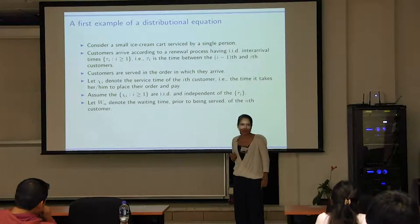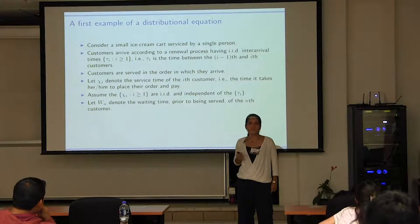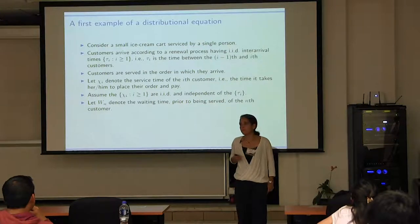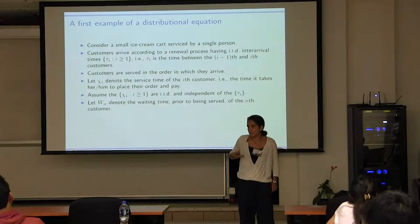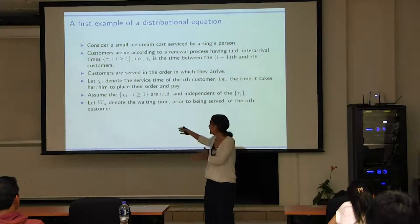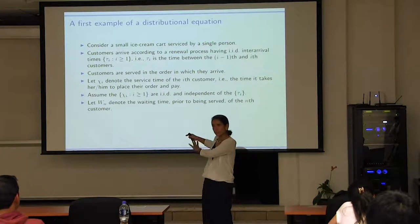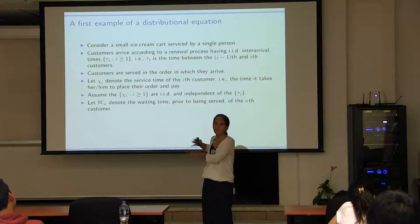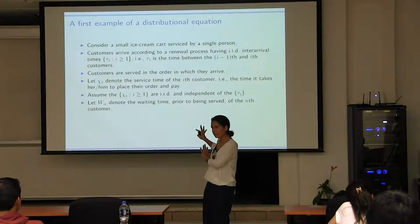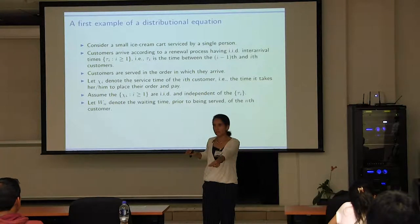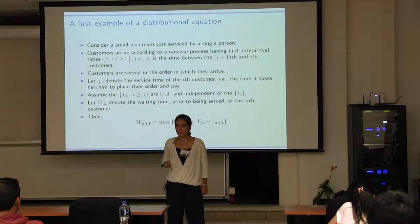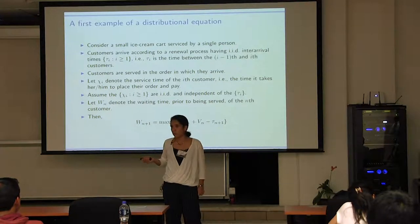I'm going to define something called the waiting time W_n — the waiting time of the nth customer. For example, if I'm the 17th person, what is the probability I have to wait more than five minutes, or that I don't have to wait at all? I'll define it as just the actual waiting — the time between your arrival and when you get to place your order — excluding the service time itself. Some books include the service time and call that the sojourn time, but let's keep it simple.